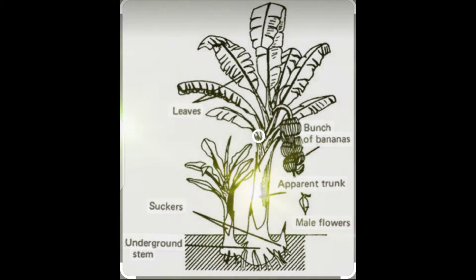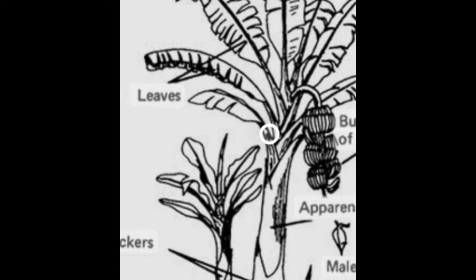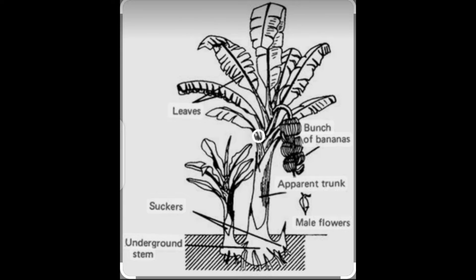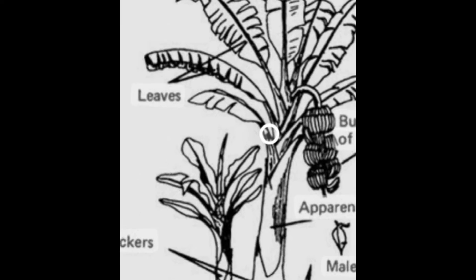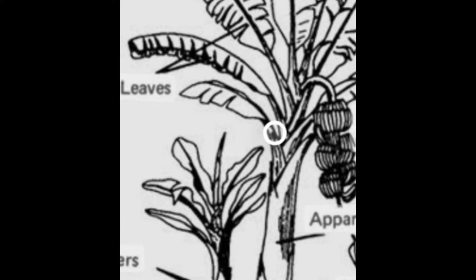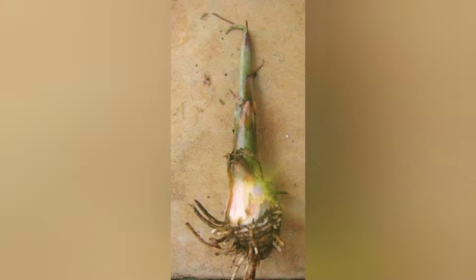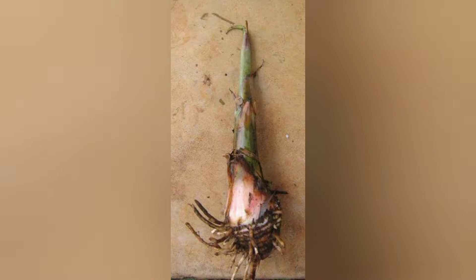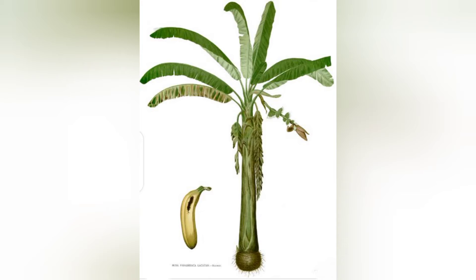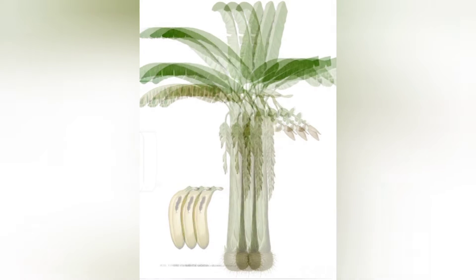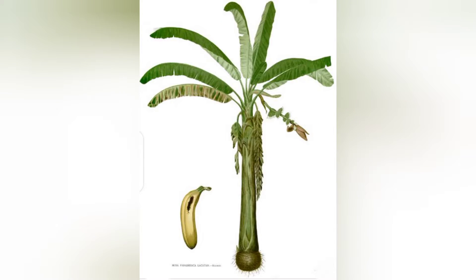The main body of the plantain is called the apparent trunk, which supports the whole fruit and the plantain itself. Unlike other plants, plantain have no seed or female flowers which can be used to propagate them. Rather, its suckers are used as a means of propagation. Here is the diagram of the plant and its fruit.